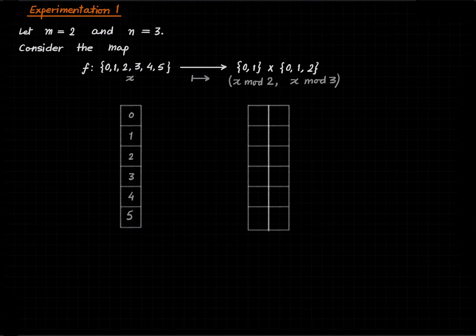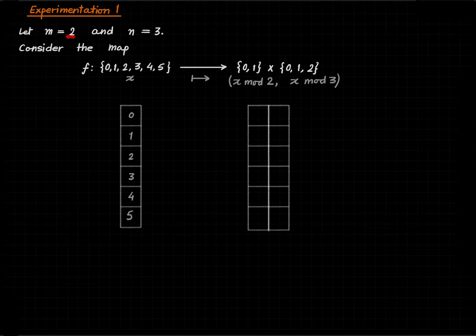First we will look at the phenomenon in a very small, simple setting. We have two relatively prime integers which I've chosen to be two and three. Don't think of them as consecutive numbers — they are just two relatively prime numbers, even though the example is very simple to illustrate the full point.